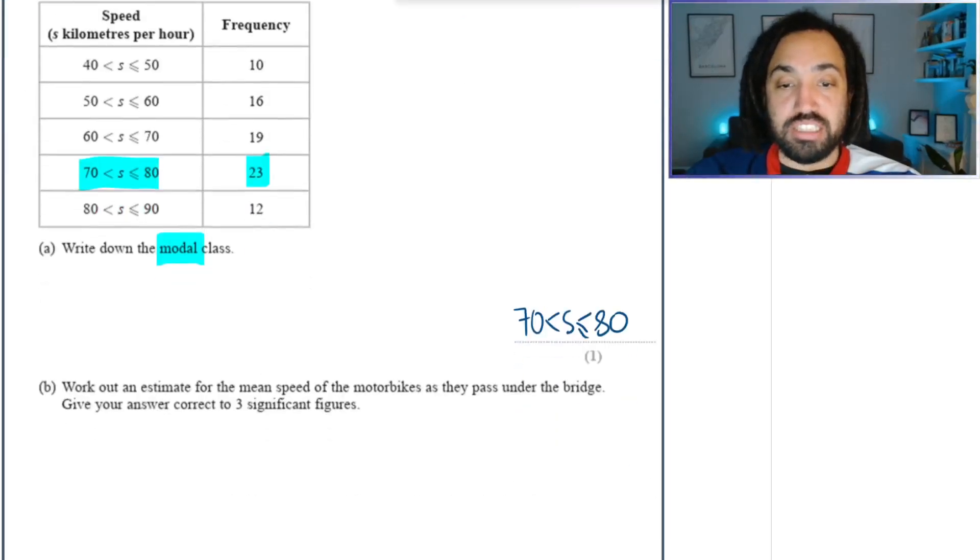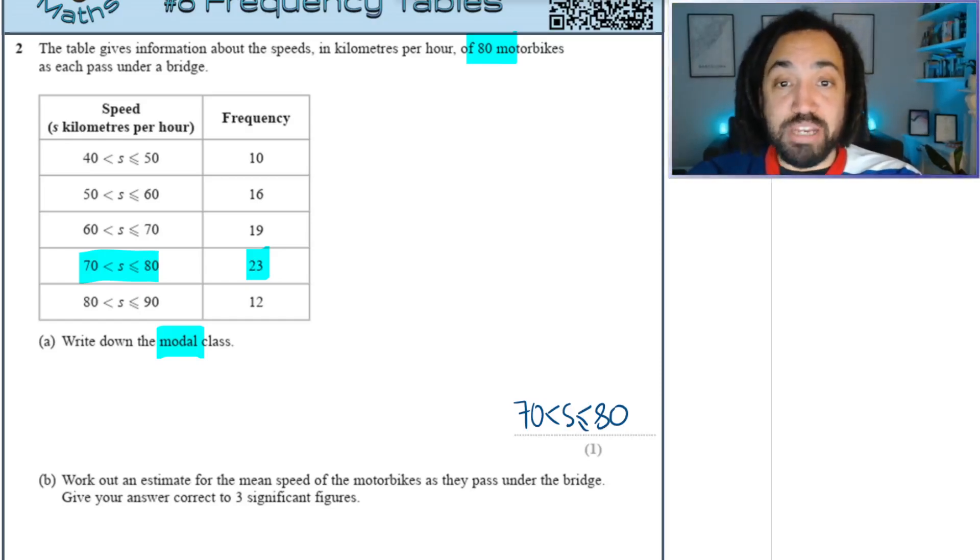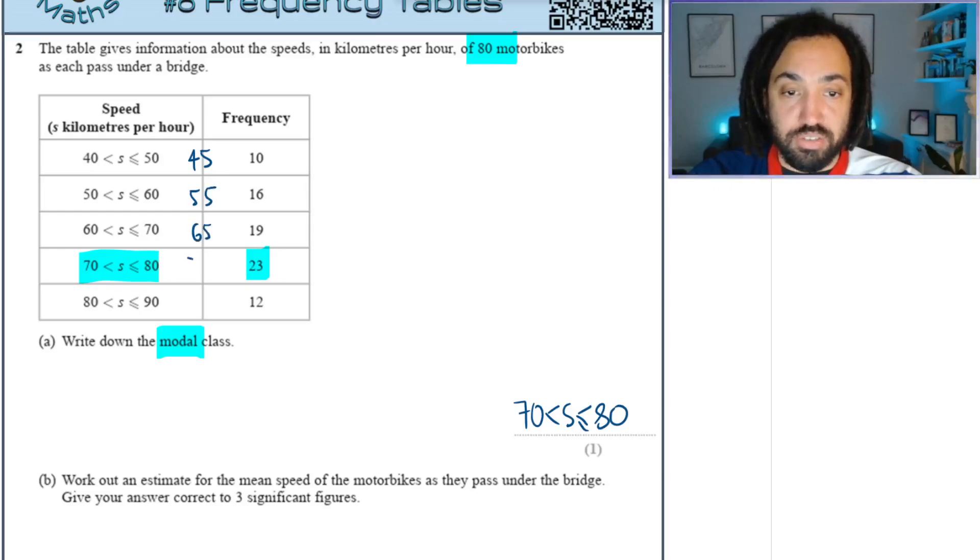Estimate the mean speed. How do we find the mean of a frequency table? We need the midpoints, so the halfway point between 40 and 50 is 45, because we're going to estimate that that row were traveling at 45. This row we're going to estimate is 55, this row is 65, this row is 75, and this row 85.